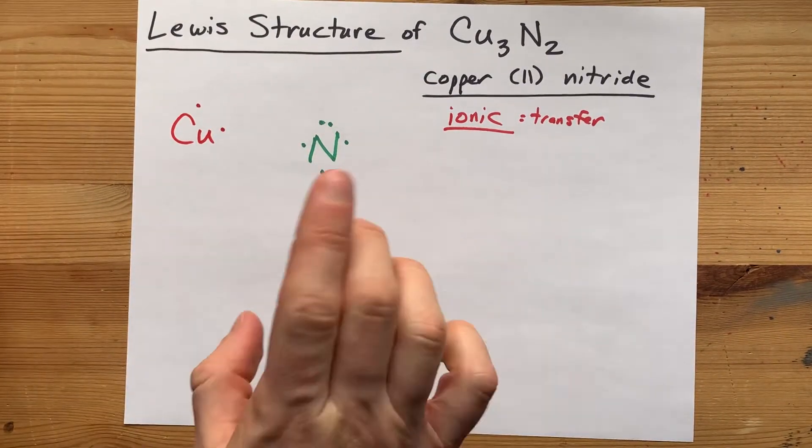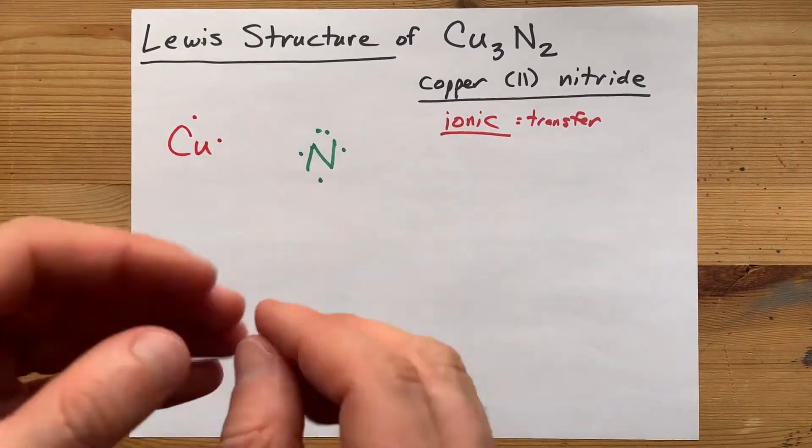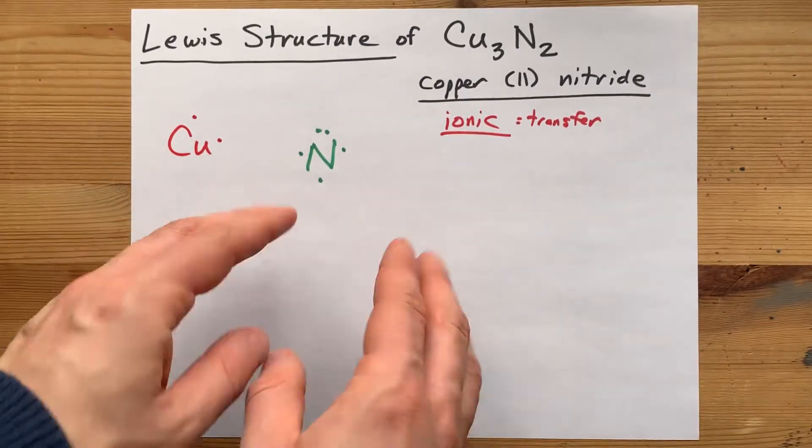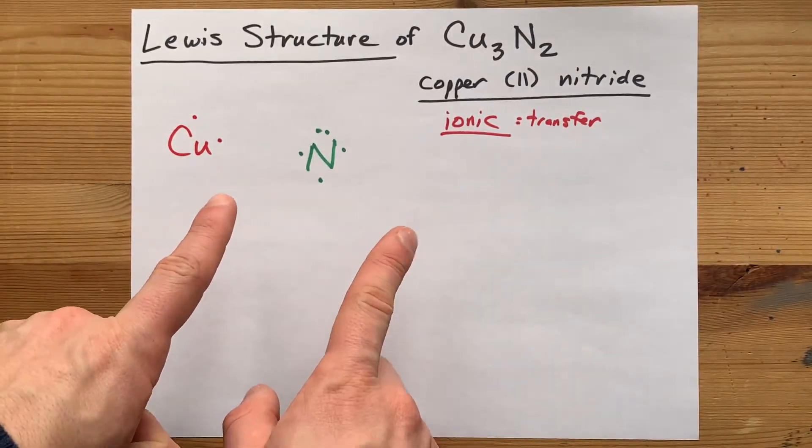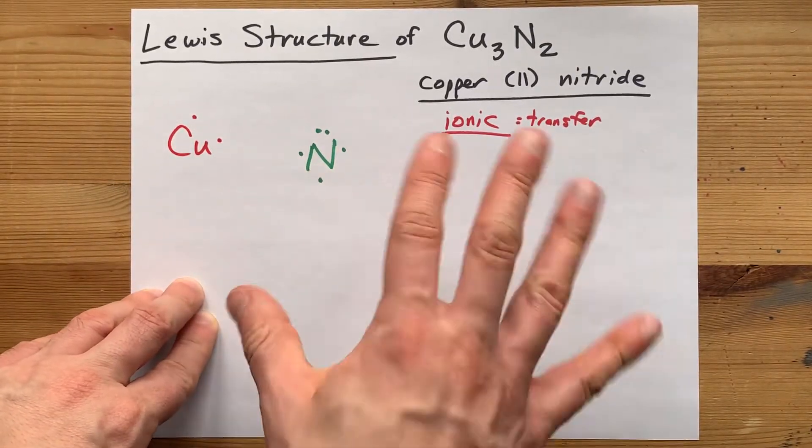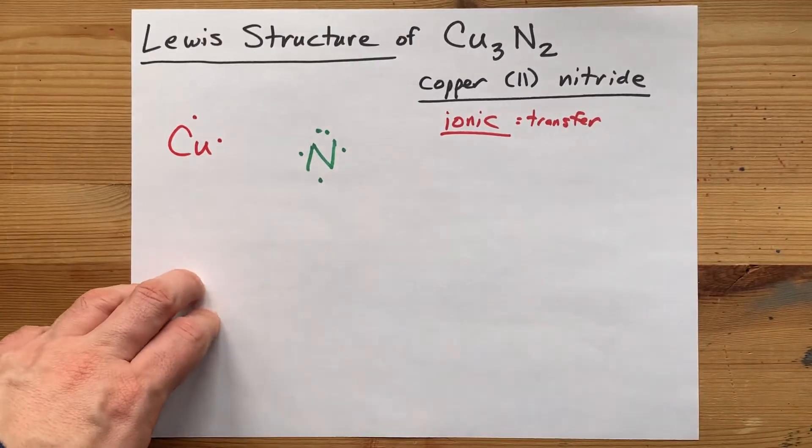Now, the key bit is that non-metals want a full octet, a full outer shell of eight electrons. Nitrogen brought five, so it needs three more.